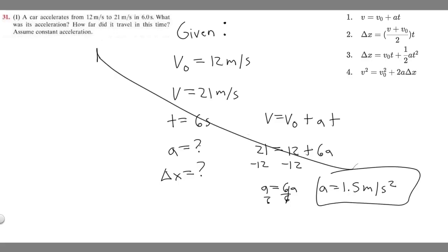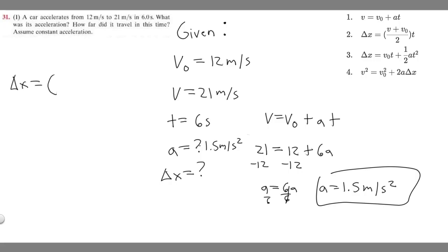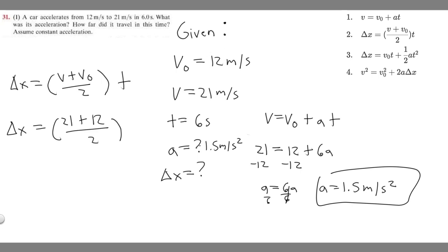Now we have to find how far it traveled, so Δx with a = 1.5 m/s². Looking at the kinematic equations for Δx, the easiest one to use is Δx = (v + v₀)/2 × t, since we're given v, v₀, and t. Let's solve using that equation: Δx = (21 + 12)/2 × 6.